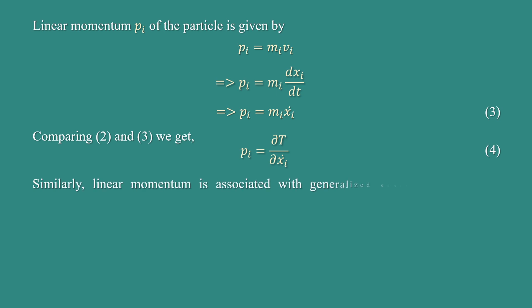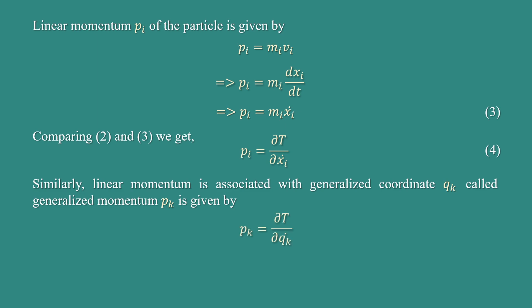Similarly, the linear momentum associated with generalized coordinate qₖ is called the generalized momentum pₖ, and is given by pₖ = ∂T/∂q̇ₖ. This is equation number 5.